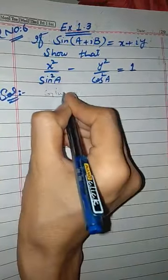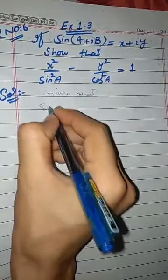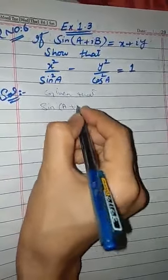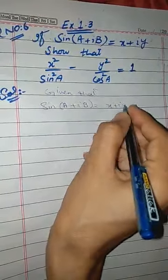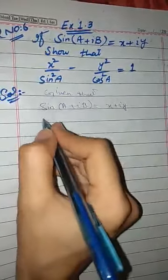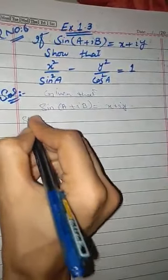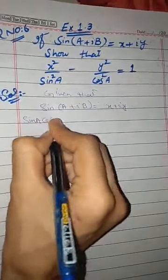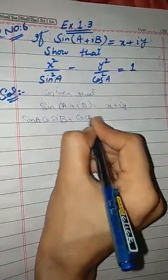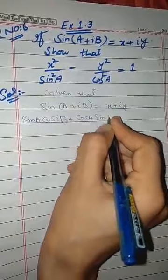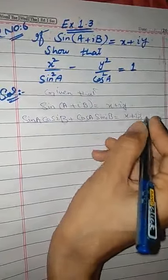First, we have to write it. Given that sin(a + ib) is equal to x + iy. Now let's open this formula: sin(a + b) = sin(a)cos(ib) + cos(a)sin(ib), which is equal to x + iy.